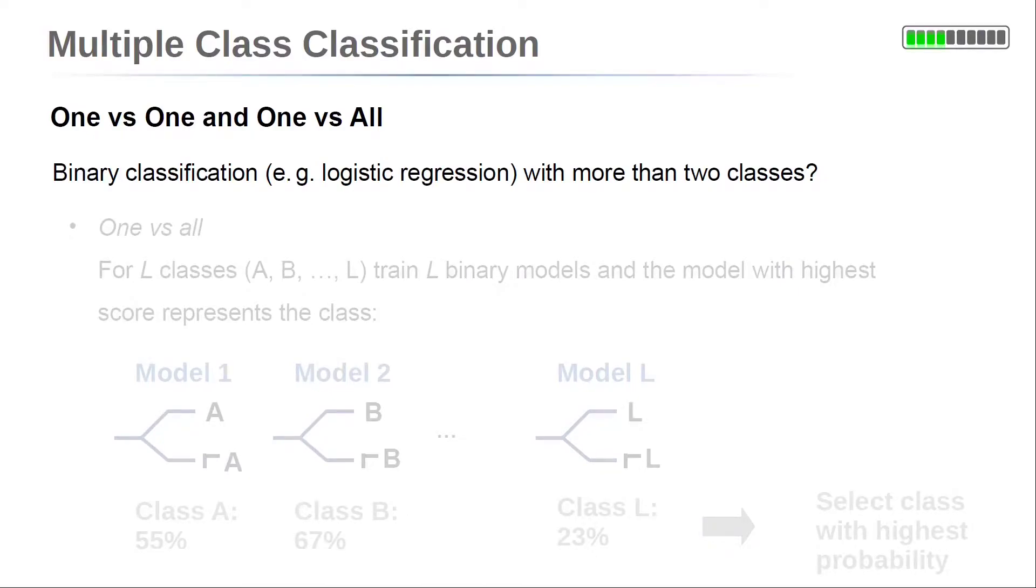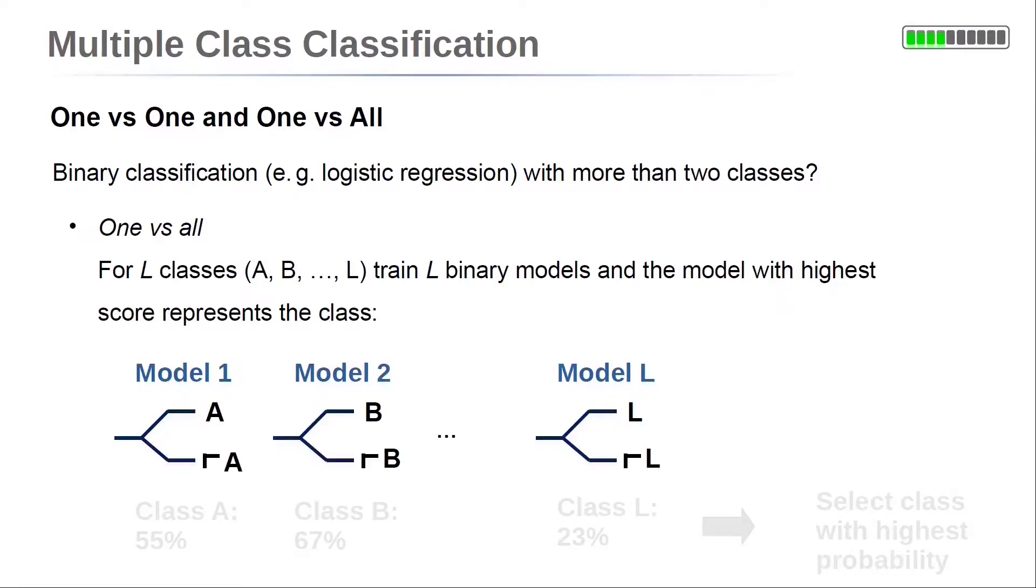The idea is to use multiple models which can decide between two classes. The first approach is called one versus all. To decide between capital L classes, we need capital L models.